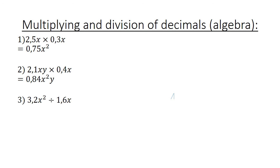3.2x to the power of 2 divided by 1.6x. 3.2 divided by 1.6 is equal to 2, and x to the power of 2 divided by x is equal to x.